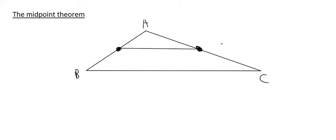Now, mathematically, what that will automatically do — and this is what the midpoint theorem says — is that these two sides will automatically be parallel, so you are allowed to call them parallel. And this length, let me call these points C and D, CD will be exactly half of BC. That's how the midpoint theorem works.